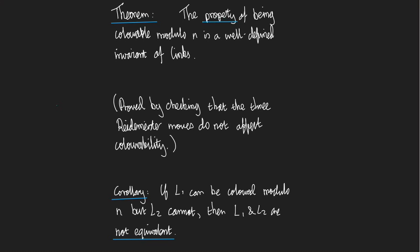The property of being colorable modulo n is a well-defined invariant of links. So how can we apply this theorem? We do it as we do in the corollary below, which I've already left some underlines in. The corollary says that if L1 can be colored modulo n, but your other link L2 cannot be colored modulo n, then L1 and L2 are not equivalent. So if we can prove that two things have different coloring properties, then they're different links.